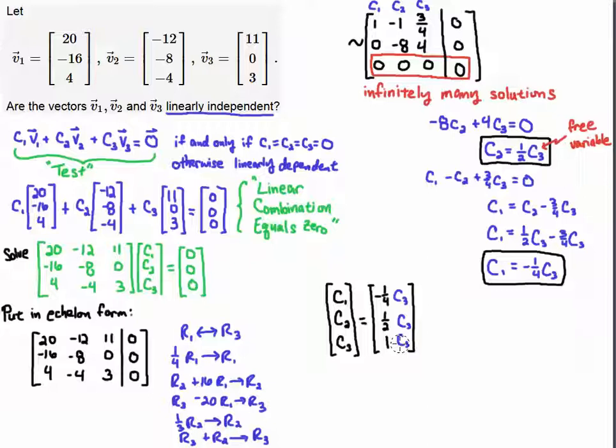Now notice that I already know the vectors are linearly dependent because I have not satisfied this definition. The test here fails in that regard where c1 equals c2 equals c3 equals zero. I've just found a vector where that's not the case.